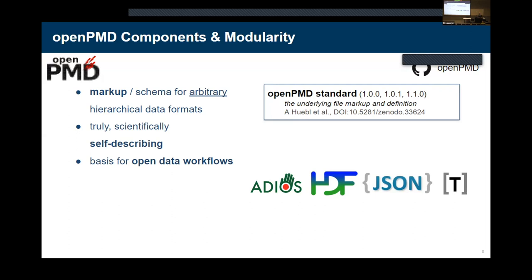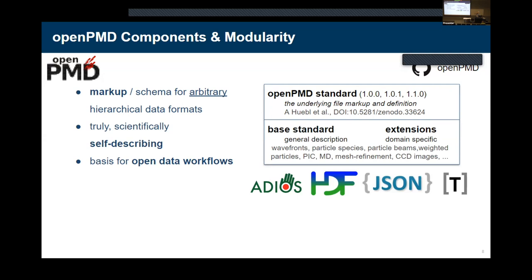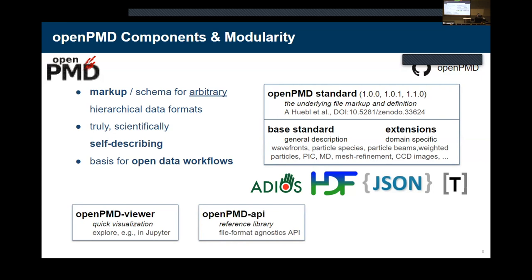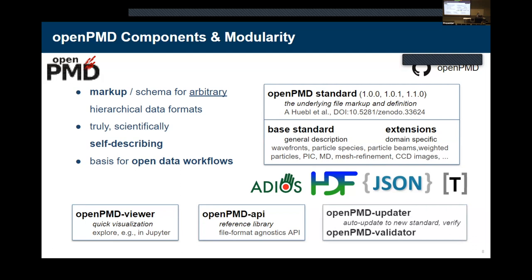How do we structure our standard? We write one base standard — a general description of how to structure data series, general meshes, and particles. Based on that you can build visualization schemas or understand something as a particle and transport it to somewhere else. On top of that we write so-called extensions, which just add more domain-specific meaning. For example, accelerator physics specifics would be an extension — you pick and choose like Lego: the base standard plus whichever extensions you need. We have reference libraries, update scripts, and validation scripts.